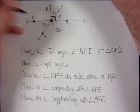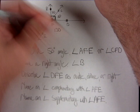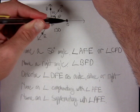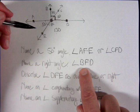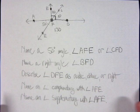To name a right angle from the diagram: start with point B on one side, then vertex F, then point D on the other side. So angle BFD is a right angle. Tracing B-F-D confirms it traces the correct angle. You could also reverse it: angle DFB is the same angle.